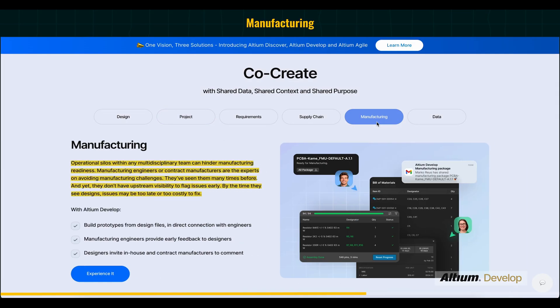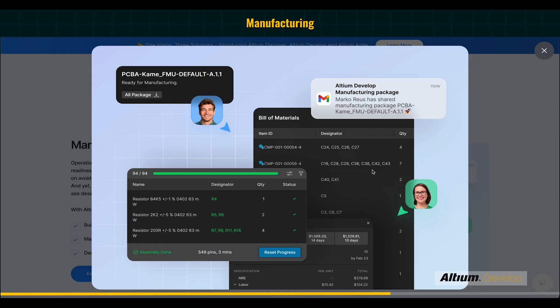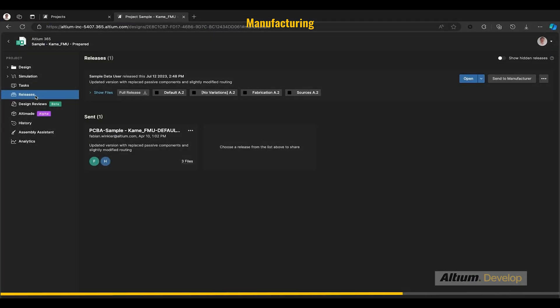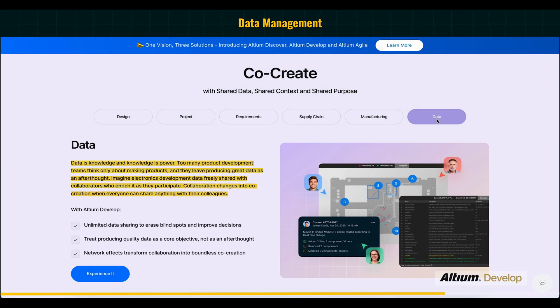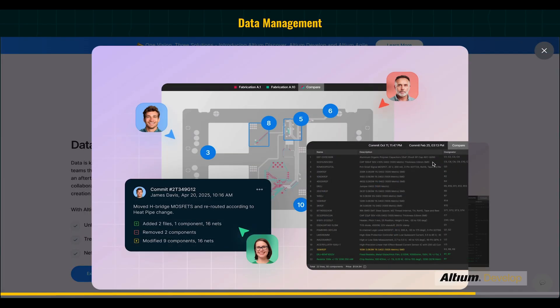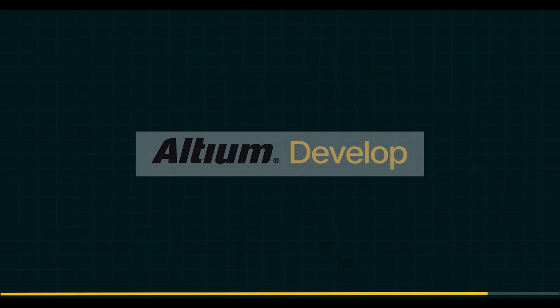After review is done, Altium Develop generates release packages with up-to-date BOM and design documents, and it preserves version history so we know who approved what and when. Finally, Altium Develop saves all of the data like version history to evolve the product during production. Our life gets easier with Altium Develop. It is faster, safer and smarter. If you want to develop a full electronics product, you can check the link in the description to know more about it.